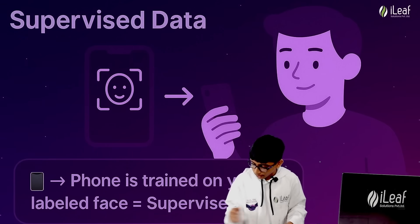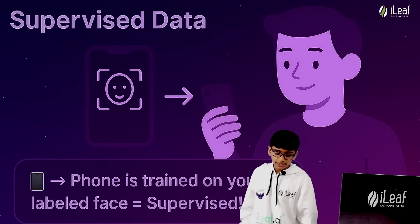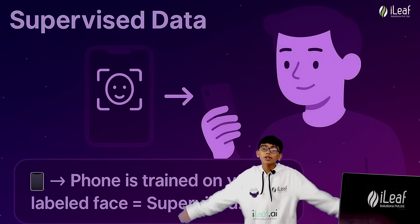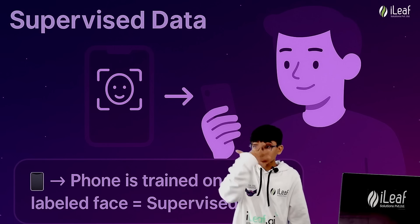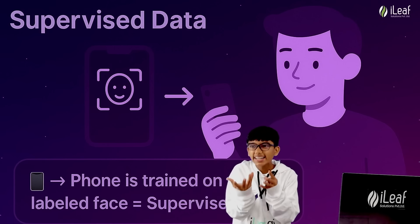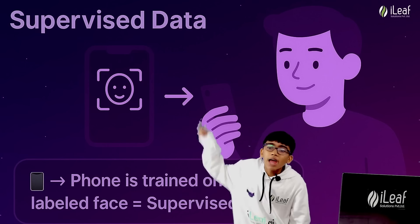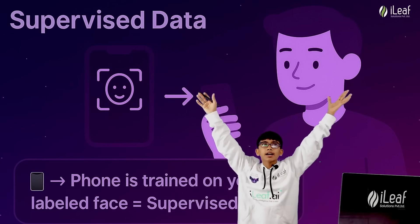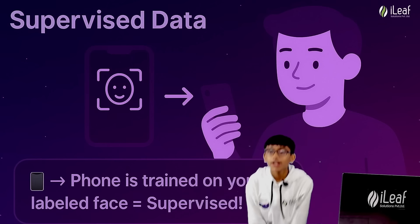An example of supervised data is your phone's face unlock. It knows exactly how your face looks, so it can unlock. It's not predicting whether your face looks like Thanos or like you — it knows precisely how your face looks.